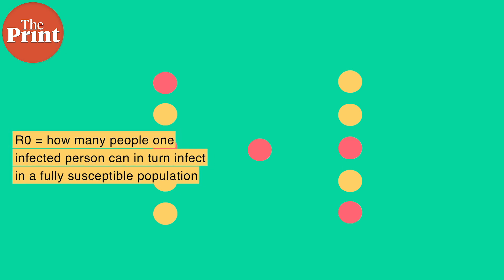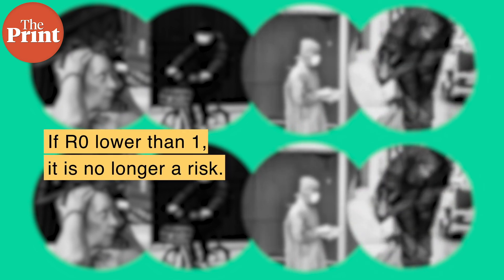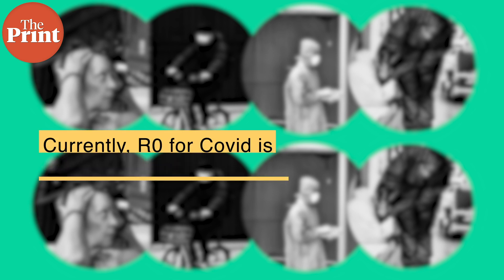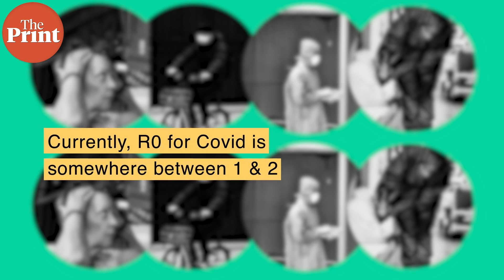R0 is a measure of how many people one infected person can in turn infect, given a fully susceptible population. If R0 is greater than 1, a person can infect more than one other person on average and thus the disease spreads exponentially. If it's lower than 1, a person infects less than one person on average and there is no risk of a pandemic. Currently, R0 for COVID-19 is somewhere between 1 and 2.